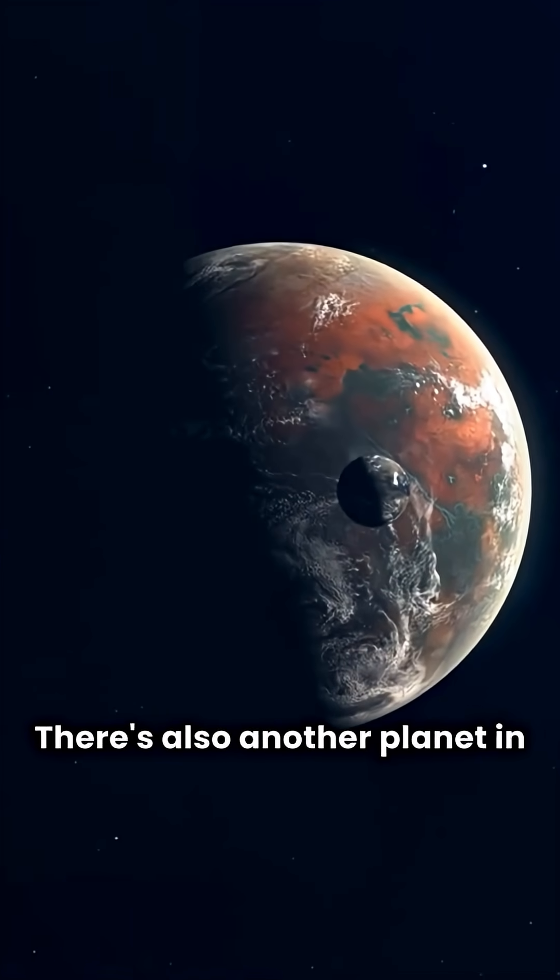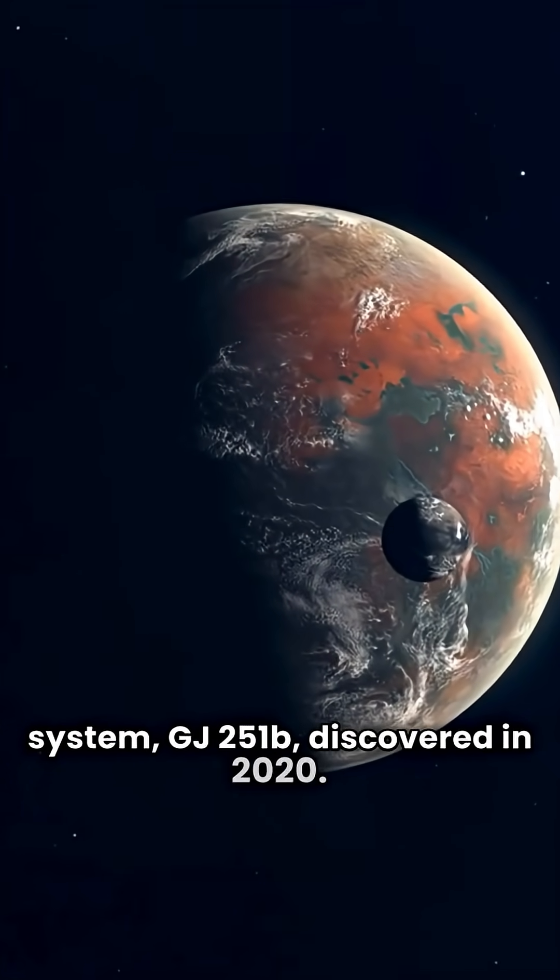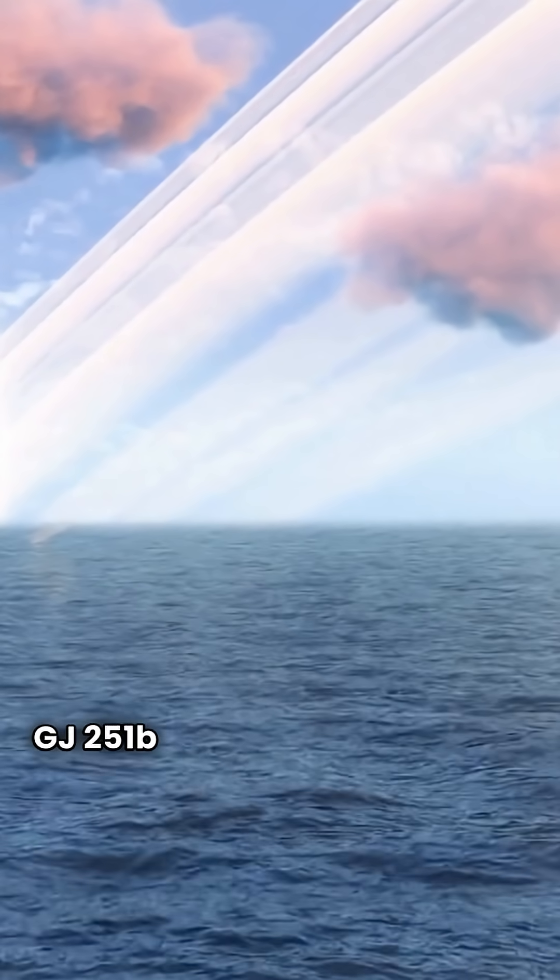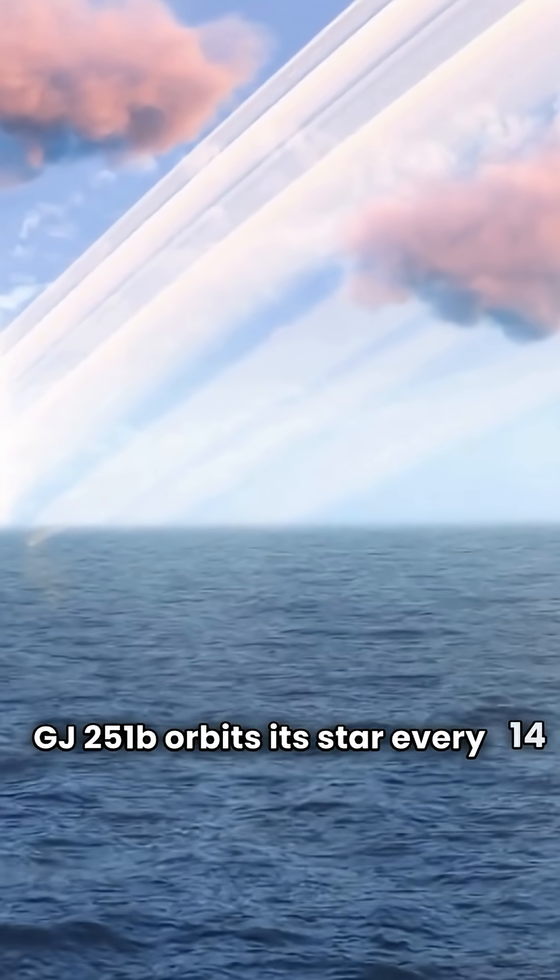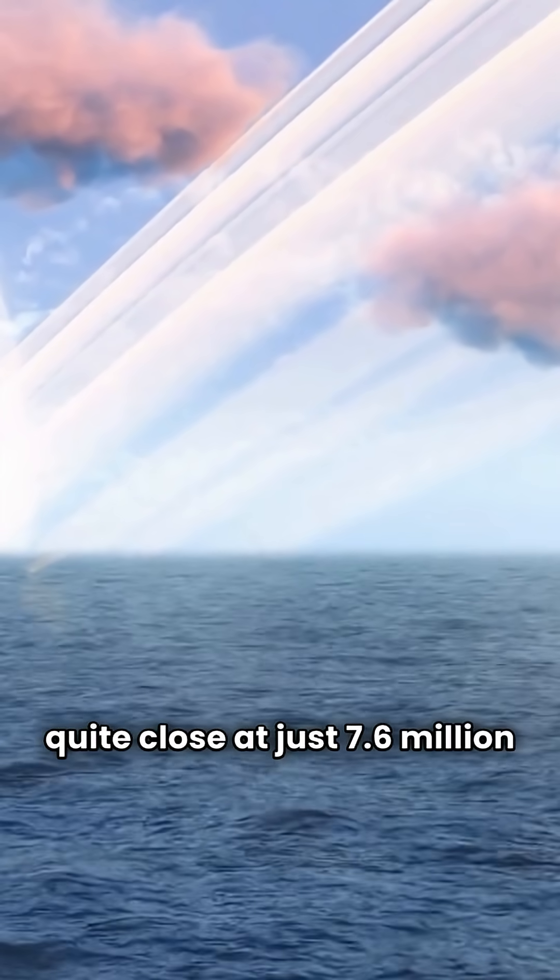There's also another planet in the system, GJ251b, discovered in 2020. GJ251b orbits its star every 14 days, quite close at just 7.6 million miles away.